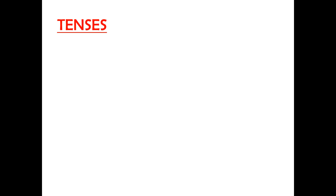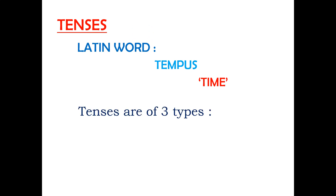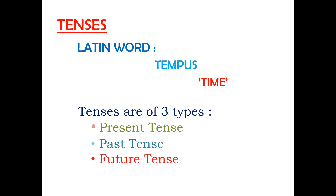A flashback on tenses. The word tense comes from the Latin word tempus, which means time. Tenses are of three types: present tense, past tense and future tense. Let's now move to future tense.